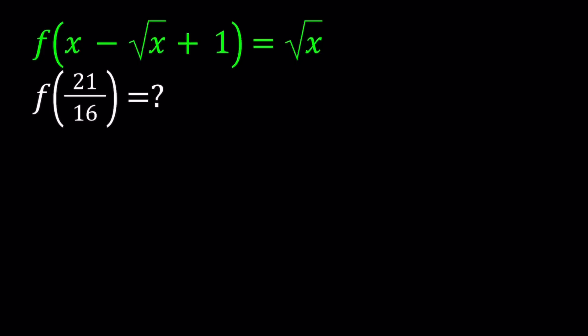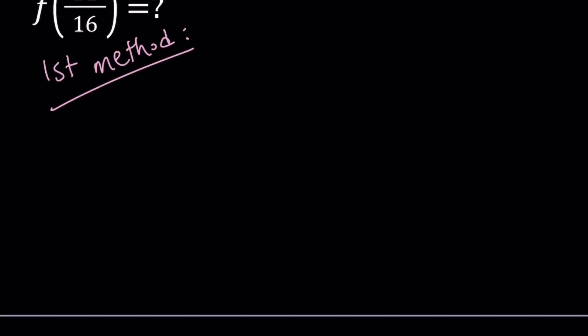I'll be presenting two methods and let's start with the first one. So here's my first method. First of all, I'm going to rewrite the problem: f of x minus square root of x plus 1 equals square root of x, and we're supposed to evaluate f of 21 over 16.